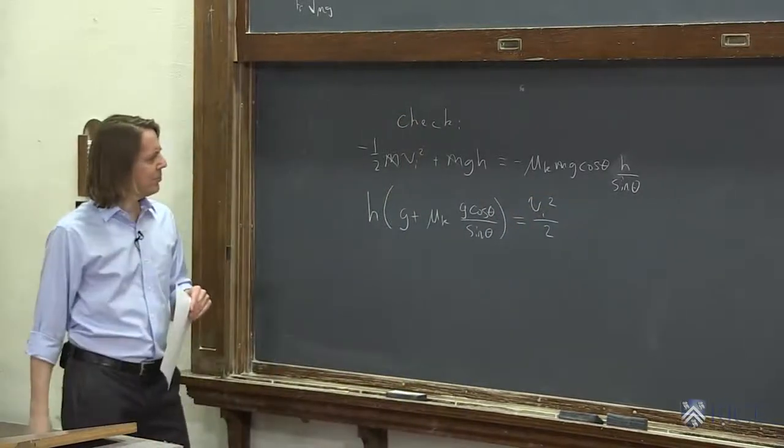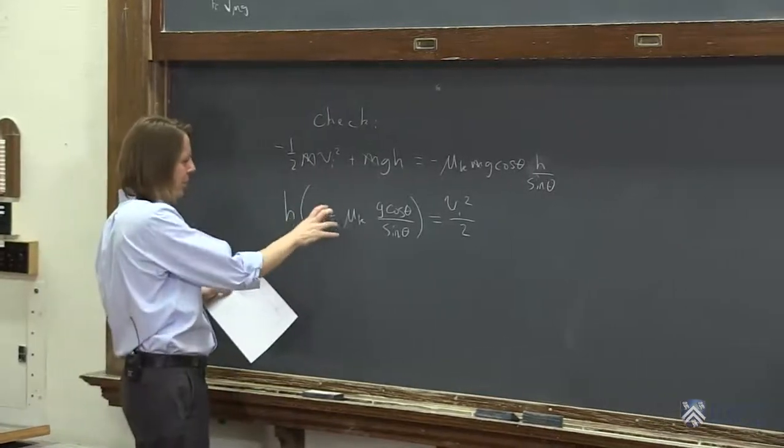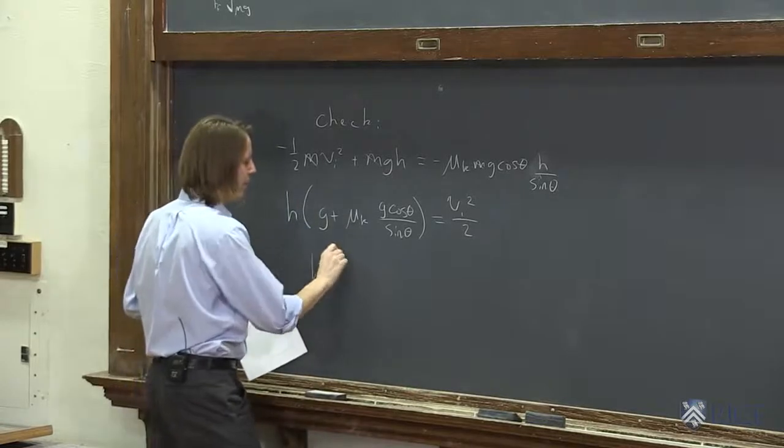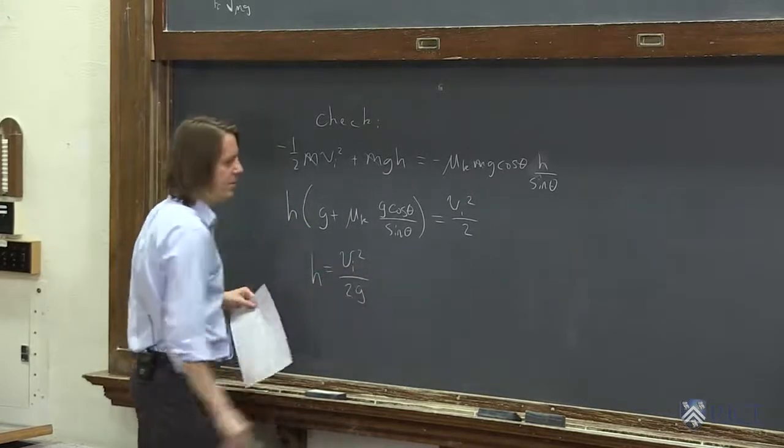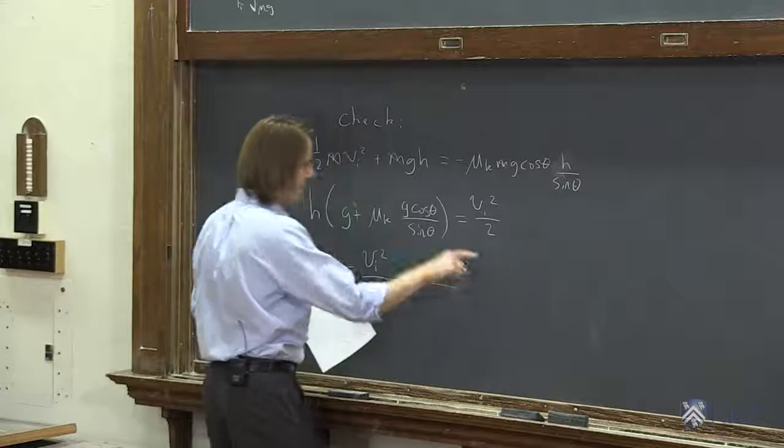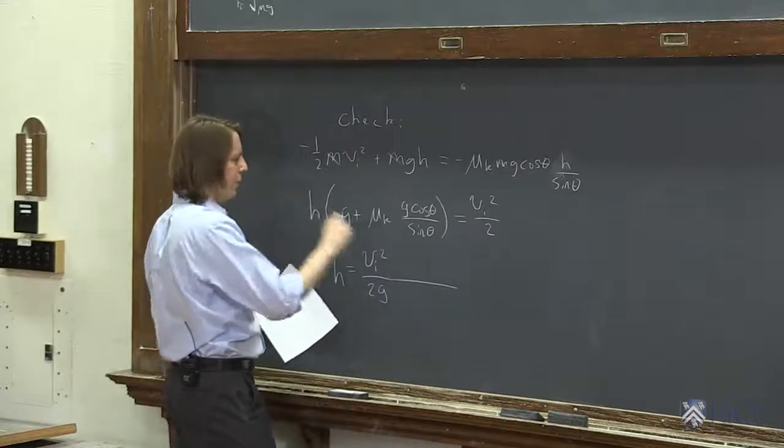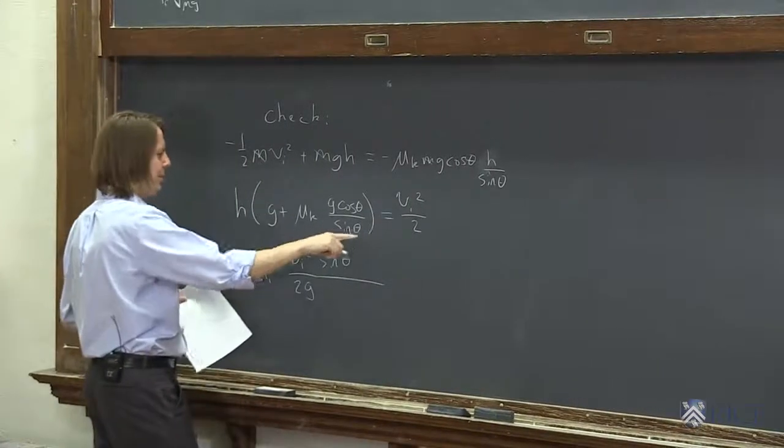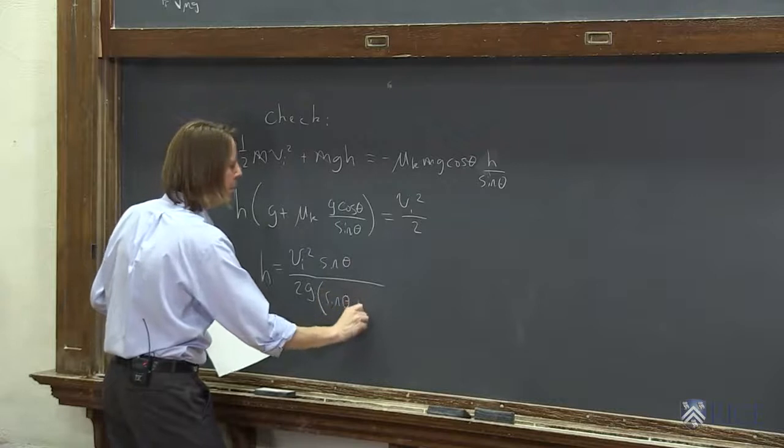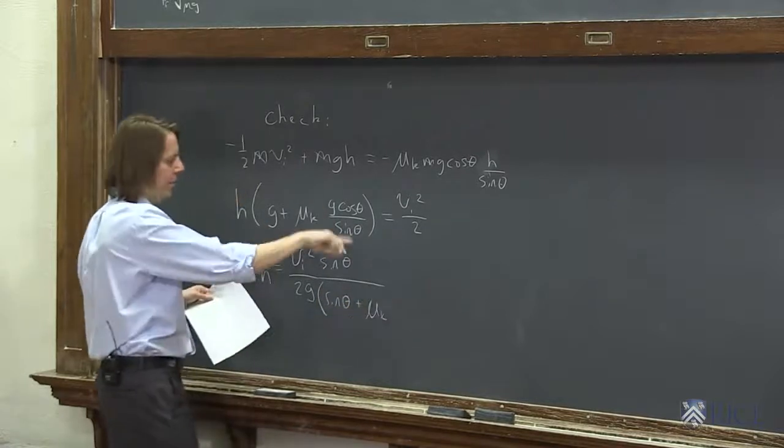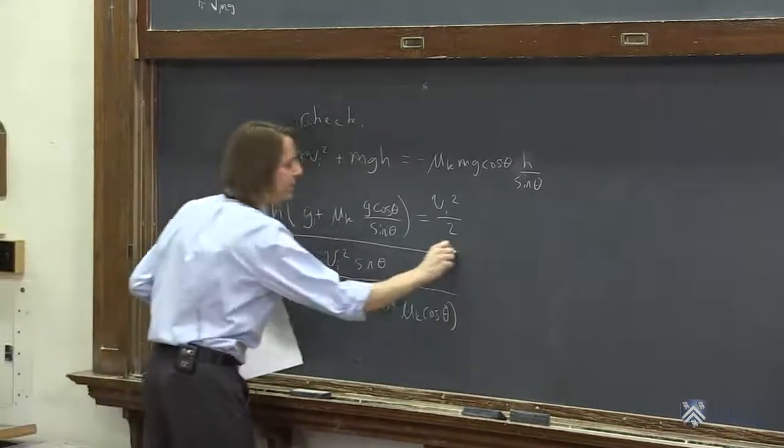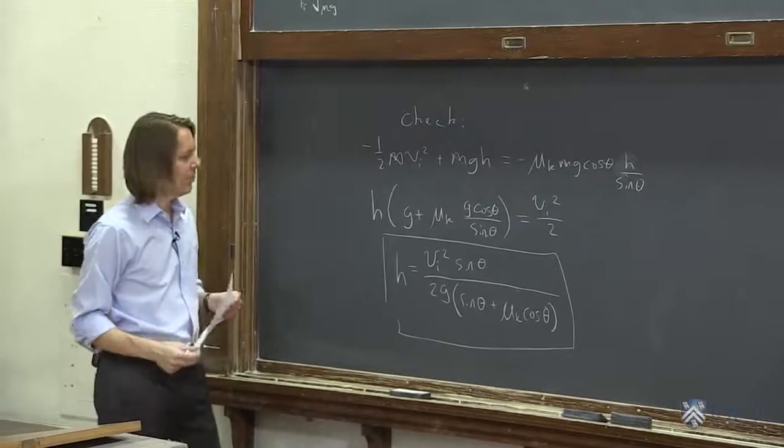All right, and we can simplify further. We're going to pull a g out of here, and then put the rest underneath, and we're going to get that h equals vi squared over 2g. And that is all going to be times what? We're going to put a sine theta up here and multiply the bottom times the sine theta, and we pulled out the g. So that's all going to be sine theta plus mu k, and then it'll cancel that sine theta, cosine theta. And I sort of worked it into that form because that matches what we had calculating it by forces.